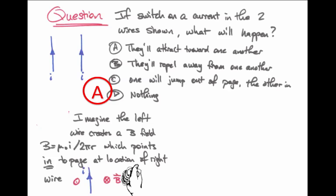We know that because of the right-hand rule. We use our thumb to point along the direction of current. Our fingers wrap around in the direction of the magnetic field. And for the left-hand wire, the magnetic field points out of the page to the left of it and into the page at its right.